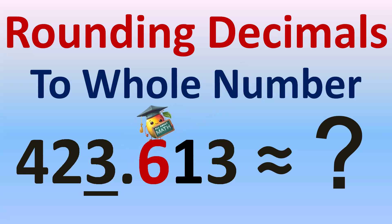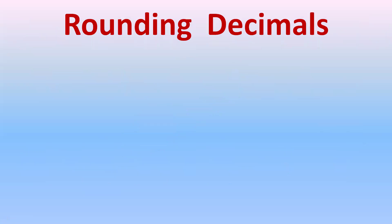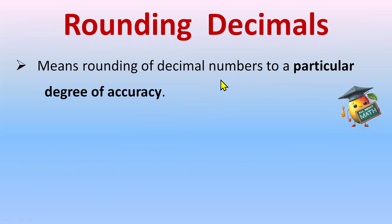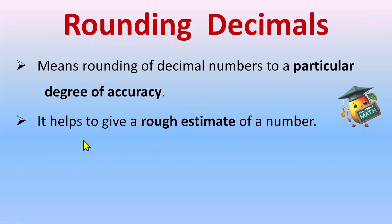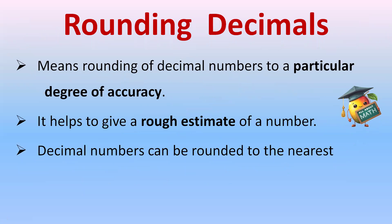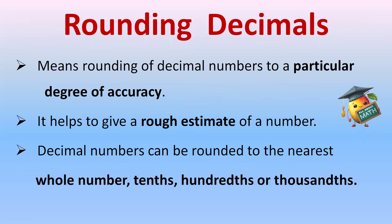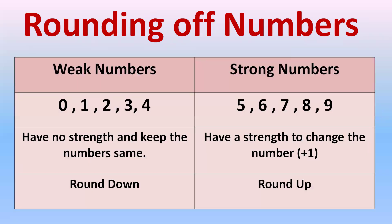Rounding decimals to a whole number. Rounding decimals means rounding decimal numbers to a particular degree of accuracy — it helps to give a rough estimate of a number. Decimal numbers can be rounded to the nearest whole number, tens, hundreds, thousands, or even ten thousands place.